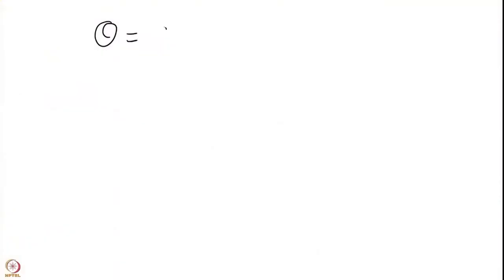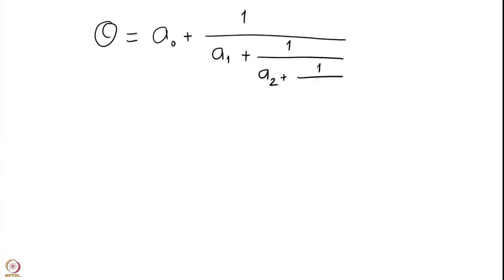Welcome back. We have constructed a continued fraction expansion towards the end of our last lecture, and we now want to prove that this expansion really converges to the theta we started with. Coming to our slide, let me recall this construction for you. We have written every theta as a0 plus 1 by a1 plus 1 by a2 plus 1 by a3 and so on. This is the continued fraction expansion for our real number theta.